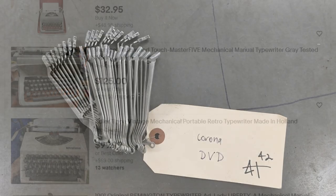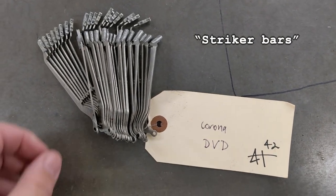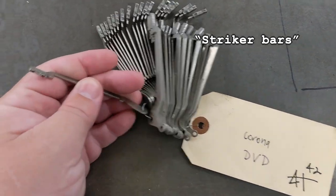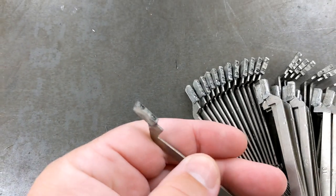But it turns out you can just buy the typing bits on eBay. They're called striker bars, and they smell amazing by the way, like concentrated essence of stationery store.